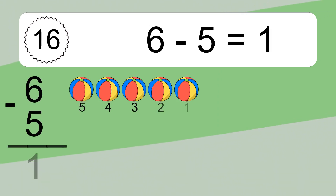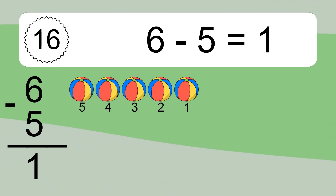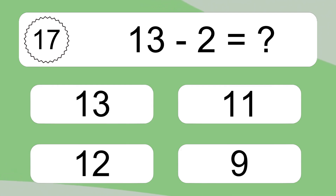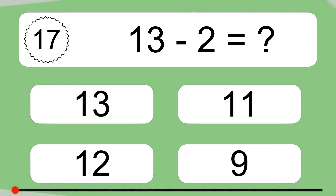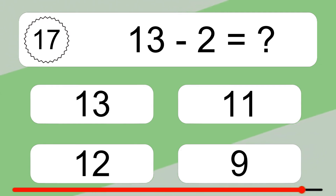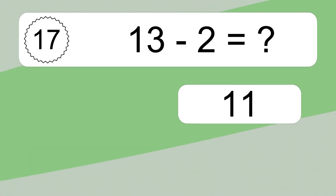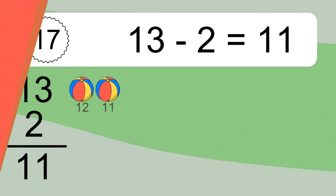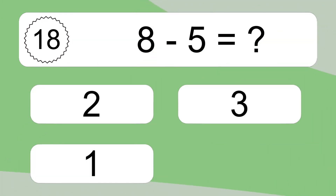6 minus 5 equals what? 6 minus 5 equals 1. Let's count it: 5, 4, 3, 2, 1.